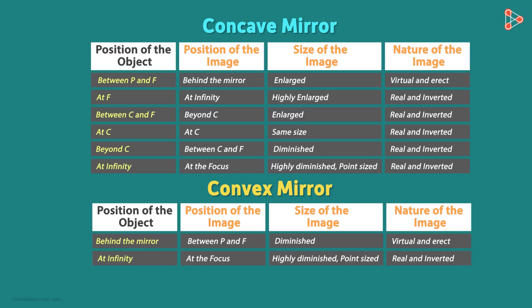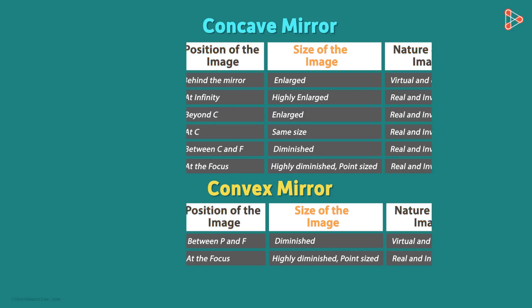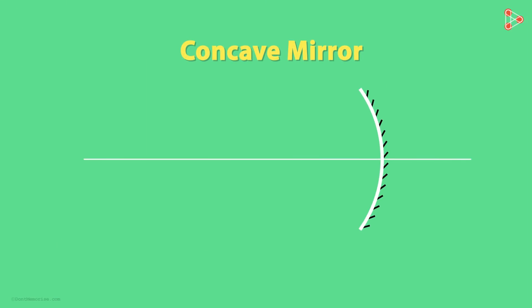The property that we are going to discuss in detail in this video is the size of the image. For a concave mirror, there are three possibilities for the size of the image relative to the object.